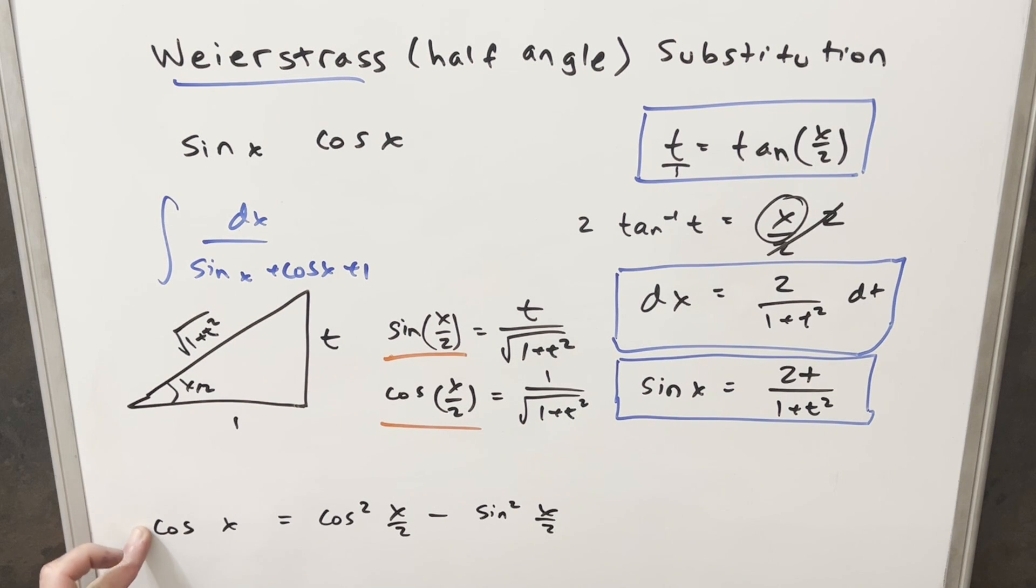We want to do basically the same thing for cosine of x. And we have these values that we just need to plug in. So for cosine squared of x over 2, we just want to square this right here. So that's going to become 1 over 1 plus t squared. And then minus, for sine squared x, we just want to square this. So that's going to become t squared over 1 plus t squared. But again, we have the same denominator. So we put that together and we get our value for cosine of x, which is 1 minus t squared over 1 plus t squared.